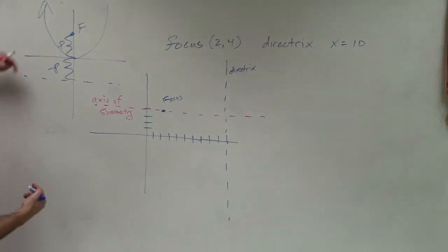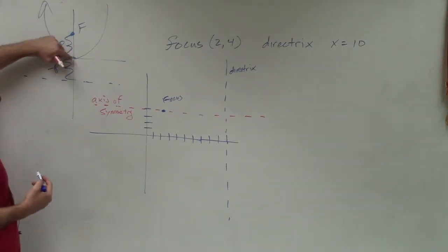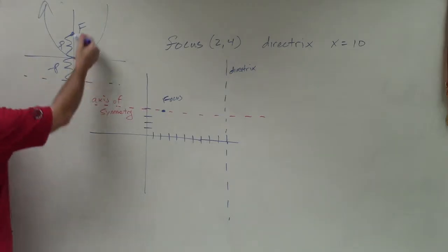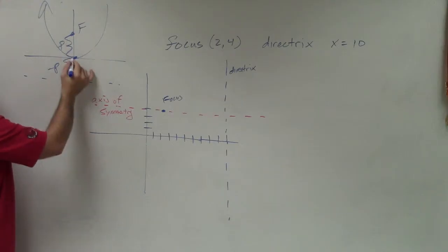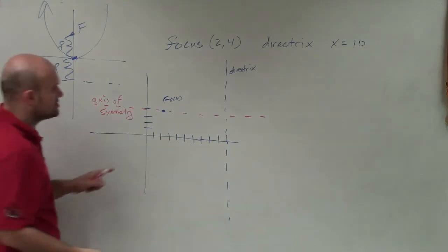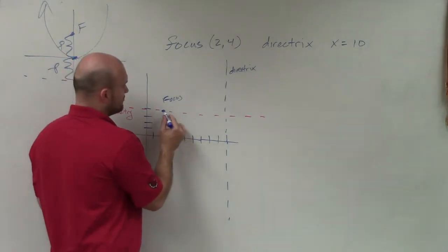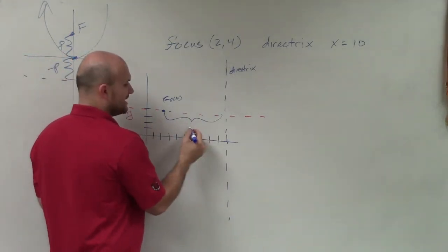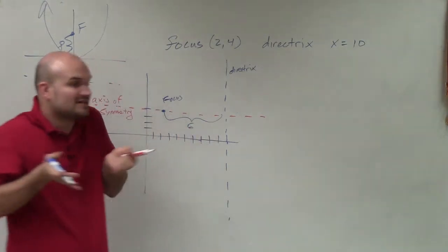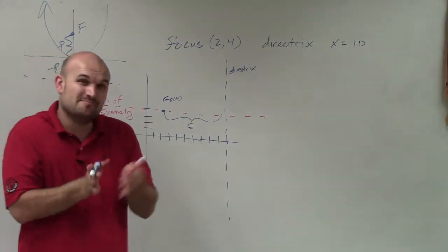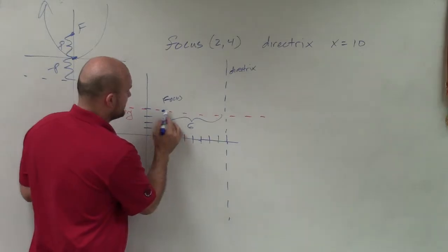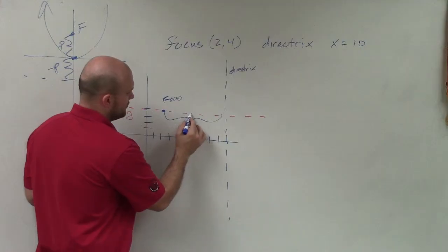OK. So what's important also to notice is that the vertex is also half the distance between my focus and my directrix. You can see the distance from this vertex is the same to the focus as it is to the directrix. So if I have my distance, the total distance here is 6. Therefore, my vertex then has to be in the middle of that. So it's going to be 3 units to the right of my focus. 1, 2, 3.